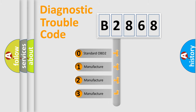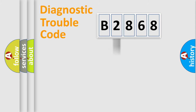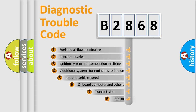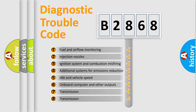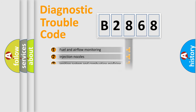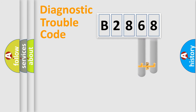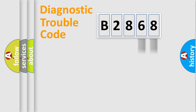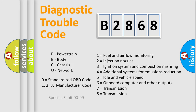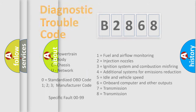If the second character is expressed as zero, it is a standardized error. In the case of numbers 1, 2, or 3, it is a manufacturer-specific expression of the car error. The third character specifies a subset of errors. This distribution is valid only for the standardized DTC code. Only the last two characters define the specific fault of the group, and this division is valid only if the second character code is expressed by the number zero.